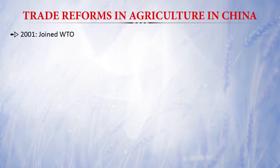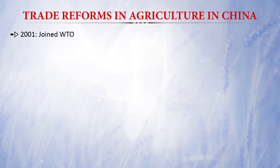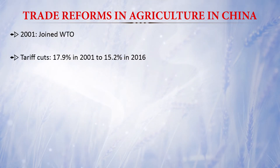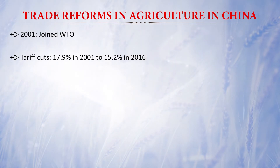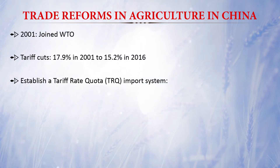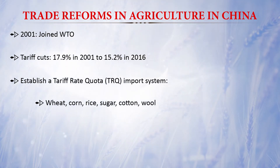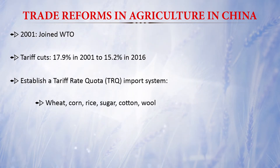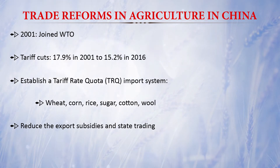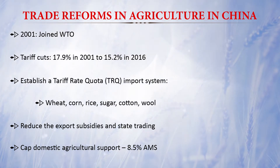China joined the World Trade Organization in 2001. After joining, there were tariff cuts: from 17.9 percent in 2001 down to 15.2 percent in 2016. China established a tariff rate quota import system for commodities like wheat, corn, rice, sugar, cotton, and wool — with zero or lower tariff rates for imports within predetermined amounts. China also reduced export subsidies and state trading, and fixed domestic agriculture support at 8.5 percent.